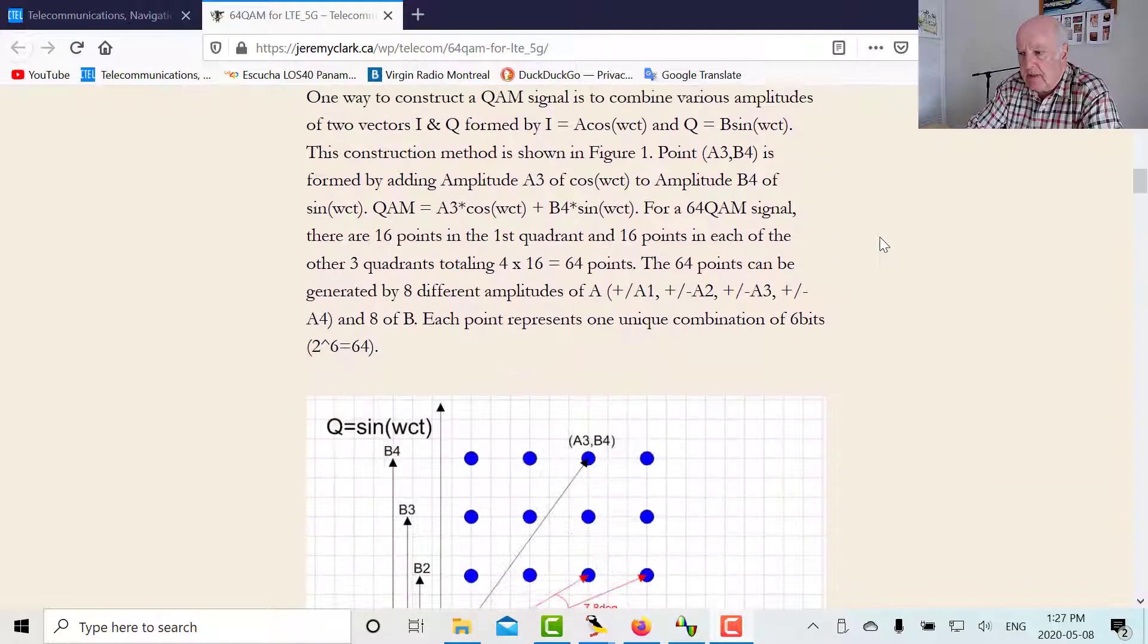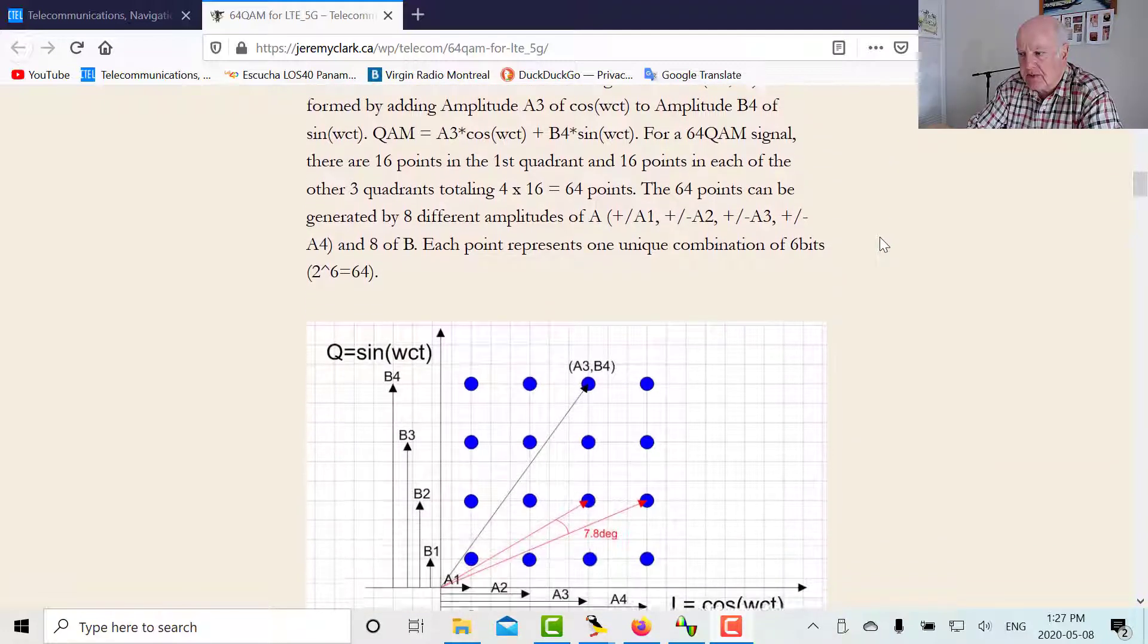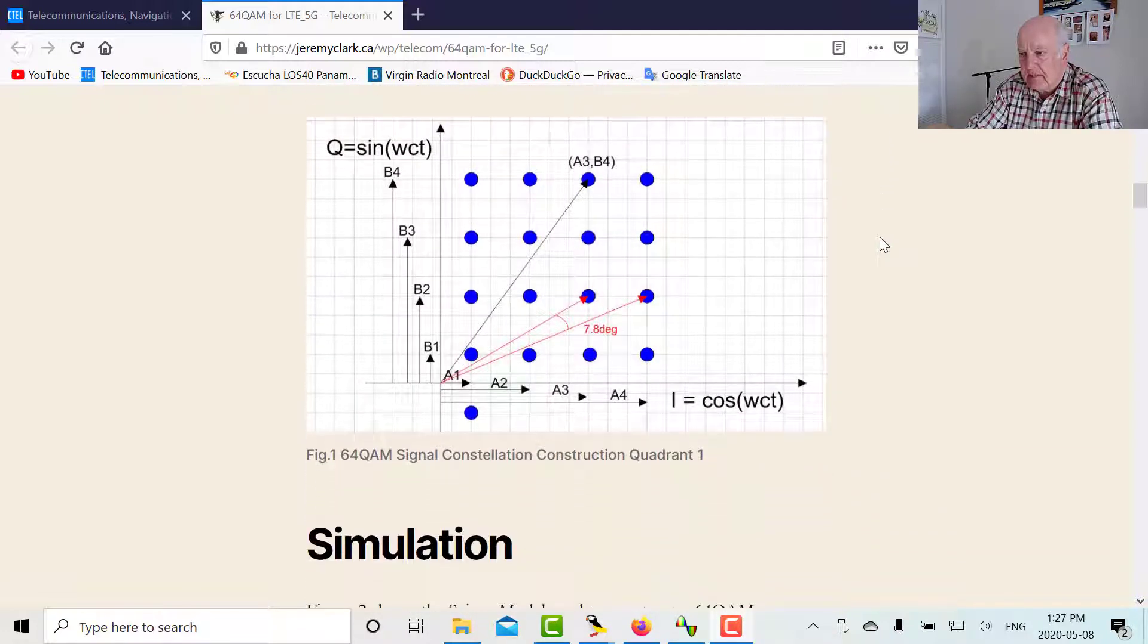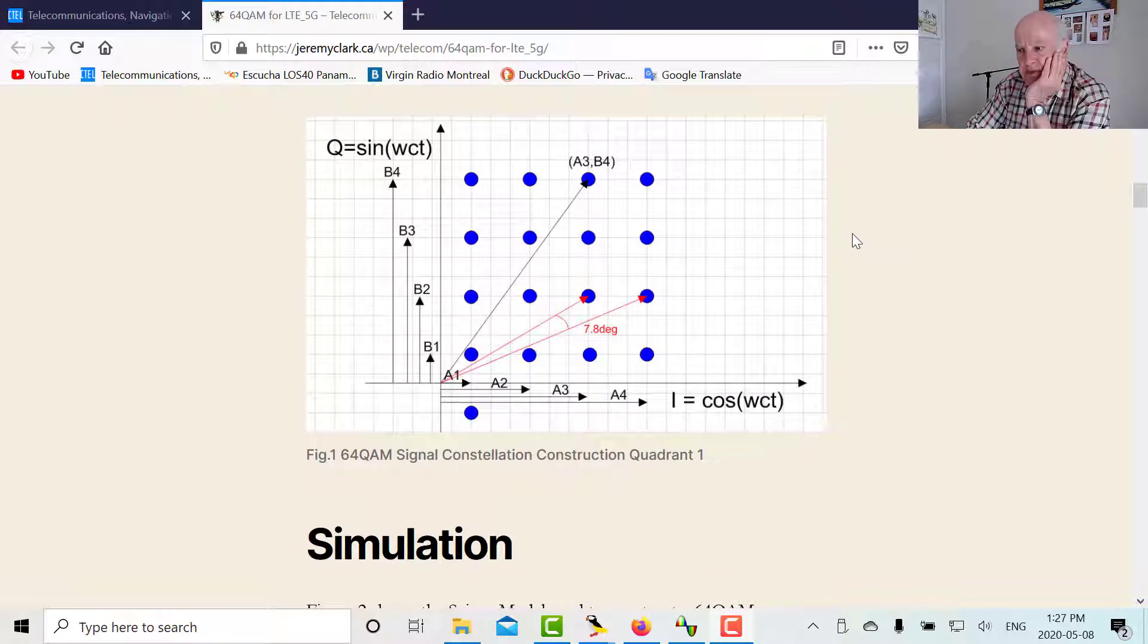So here's one way of looking at how to construct 64 QAM. Let's imagine there's four constellations. And on the x-axis we have I, the in-phase cosine omega CT. And on the y-axis we have Q, which is sine omega CT. And the various amplitudes of I and Q.